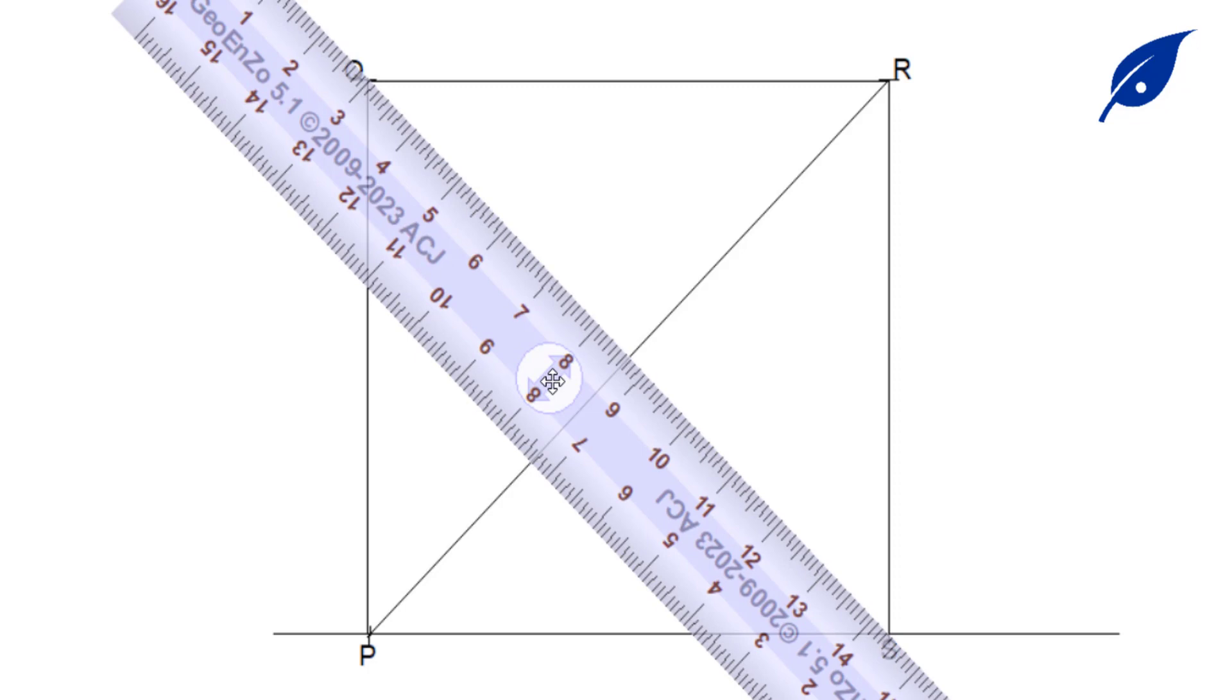After drawing these diagonals, they meet at point T. So we label the point T.